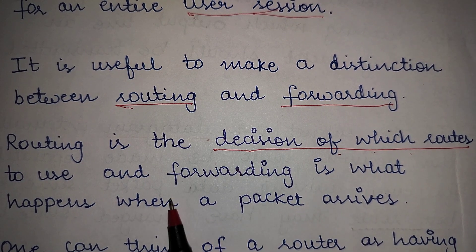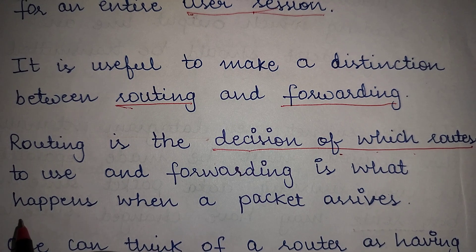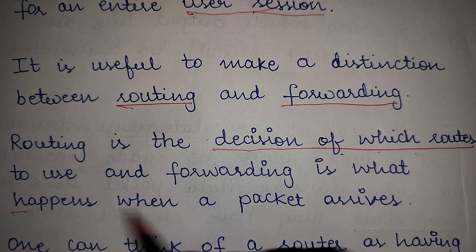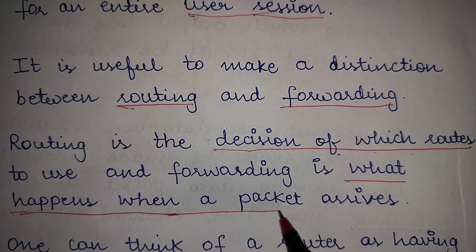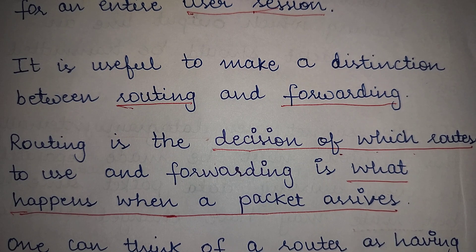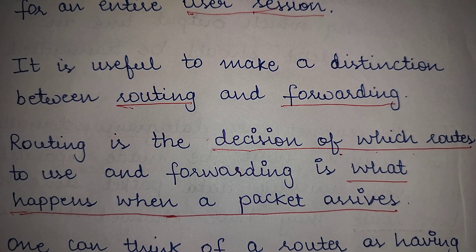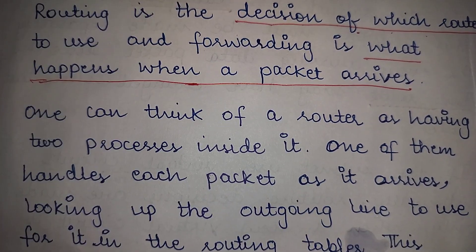Forwarding is what happens when a packet arrives. Routing is choosing a route for forwarding that packet, and forwarding is actually forwarding that packet. When a packet has arrived and based upon the routing decision a specific route is chosen, that packet is forwarded or handed over on that particular route. This is the difference between routing and forwarding.